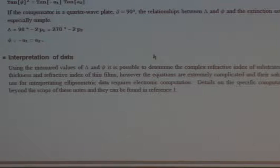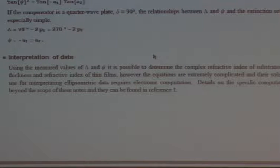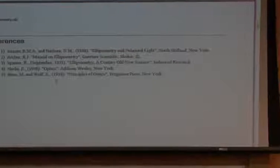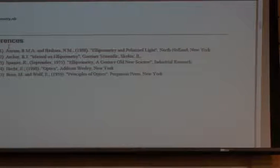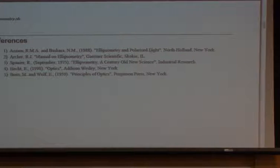From delta and psi, after complex calculations, you can determine the complex refractive index of the substrate. For thin films you can measure both thickness and refractive index. These equations are complicated and we won't derive them in class. By far the best reference is Azzam's book on ellipsometry and polarized light — it has everything you could want and is a superb book.